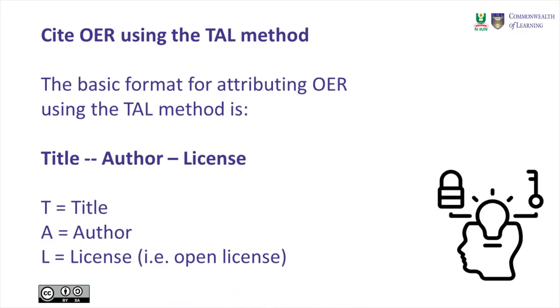Citing OER using the TAL method: the basic format for attributing OER using the TAL method is Title, Author, and License. The T means the title, the A means author, and the L means license — which refers to the open license being used for the particular textbook, image, video, and more.